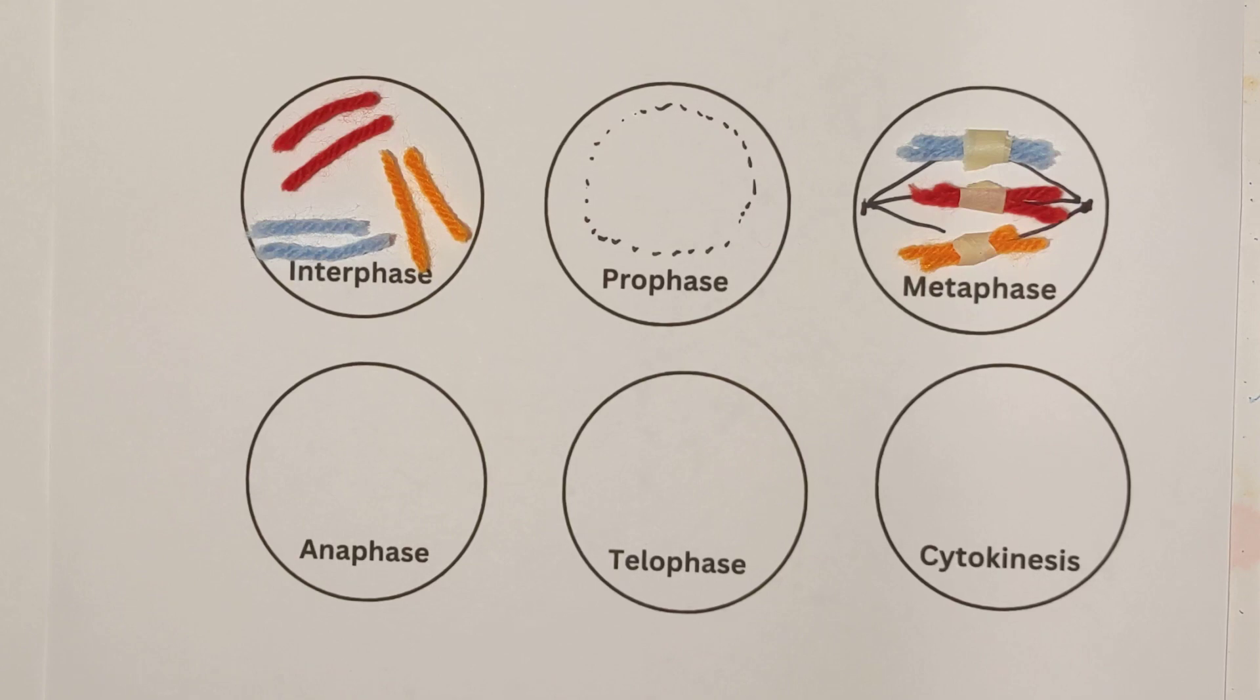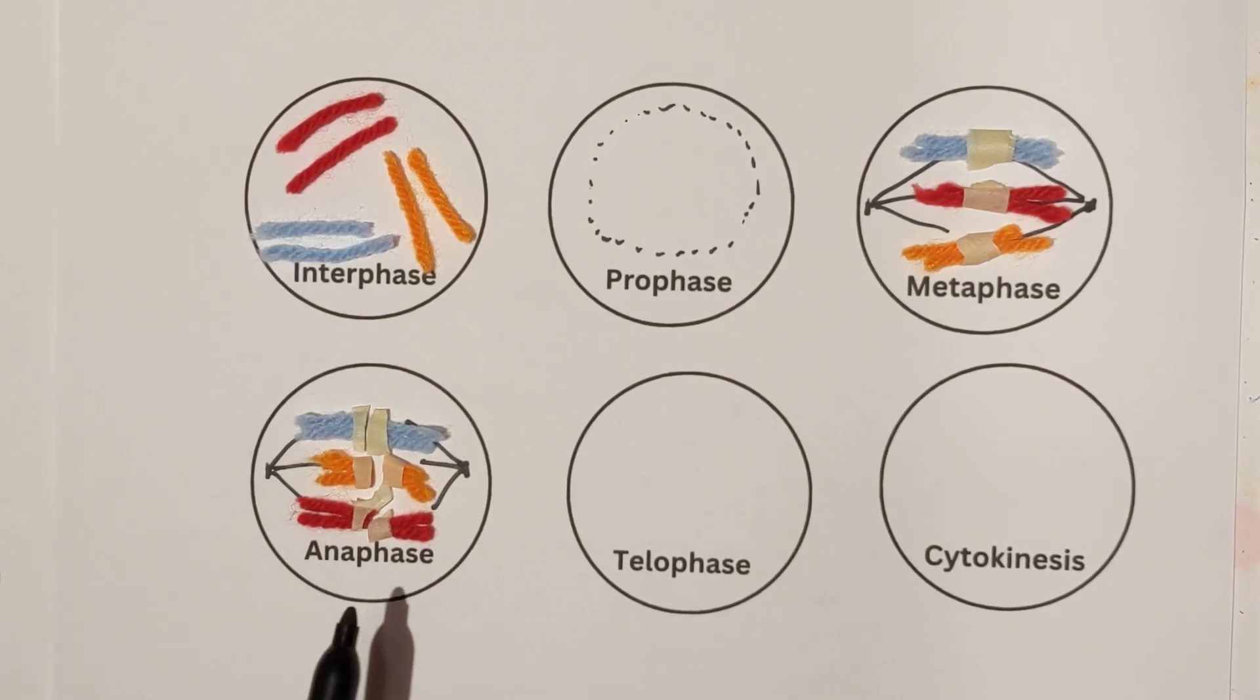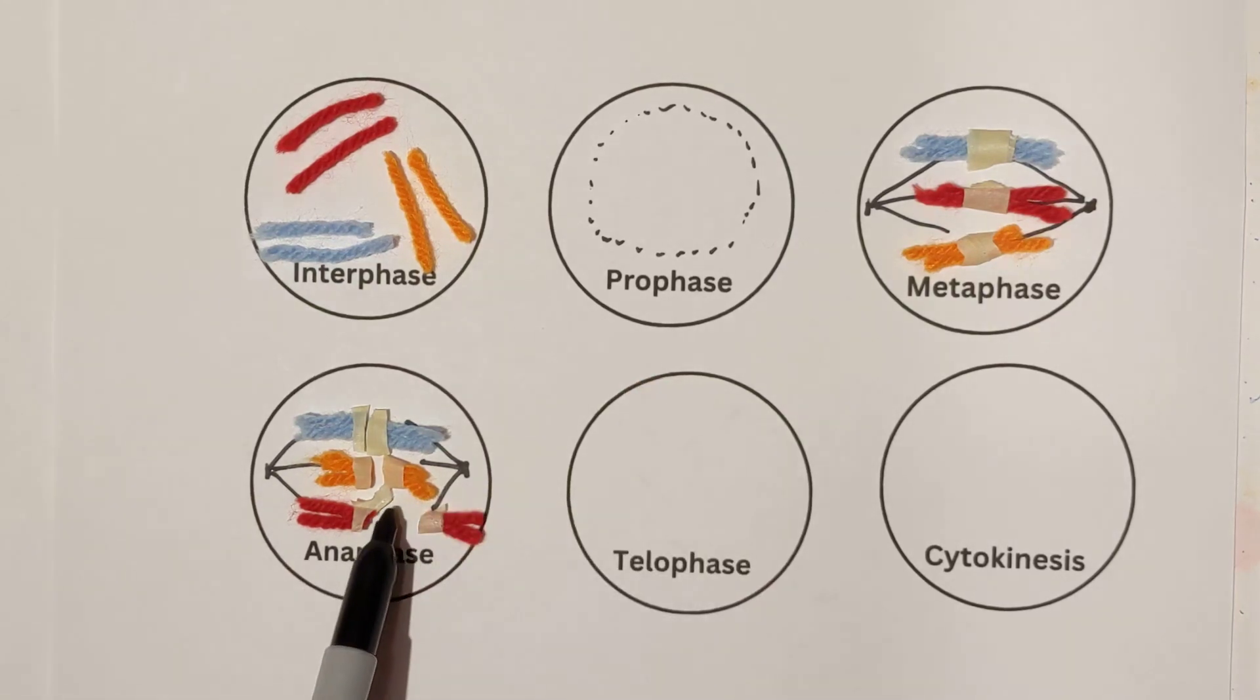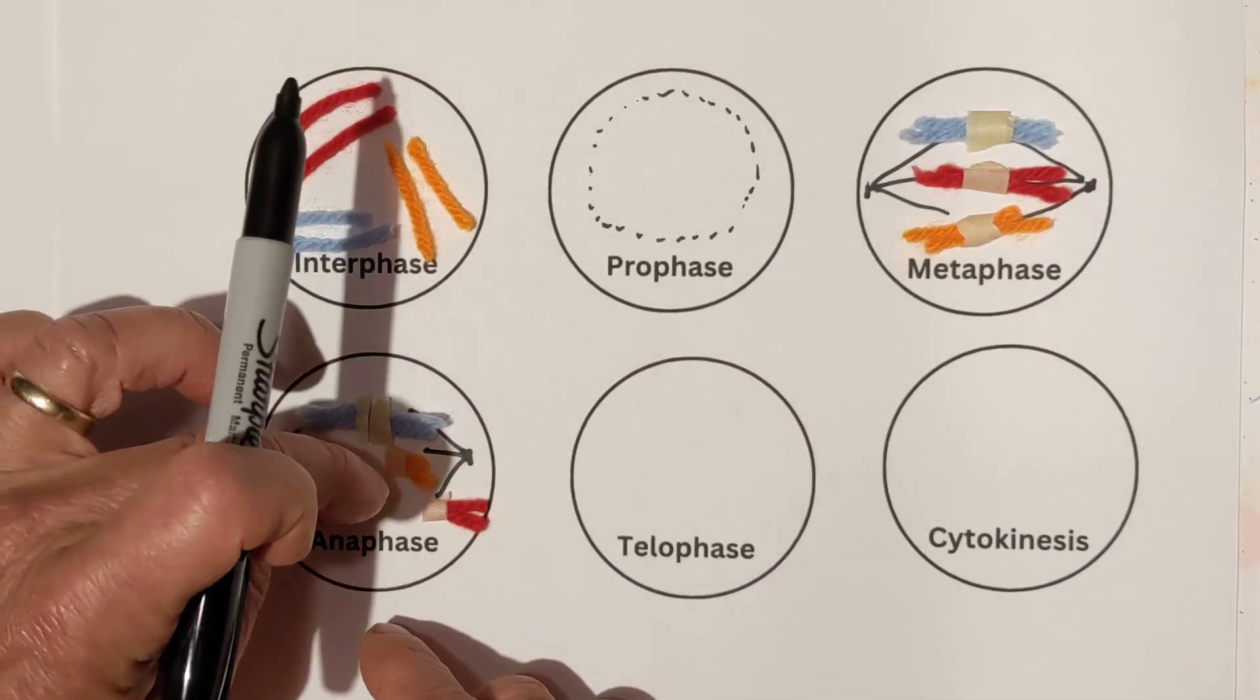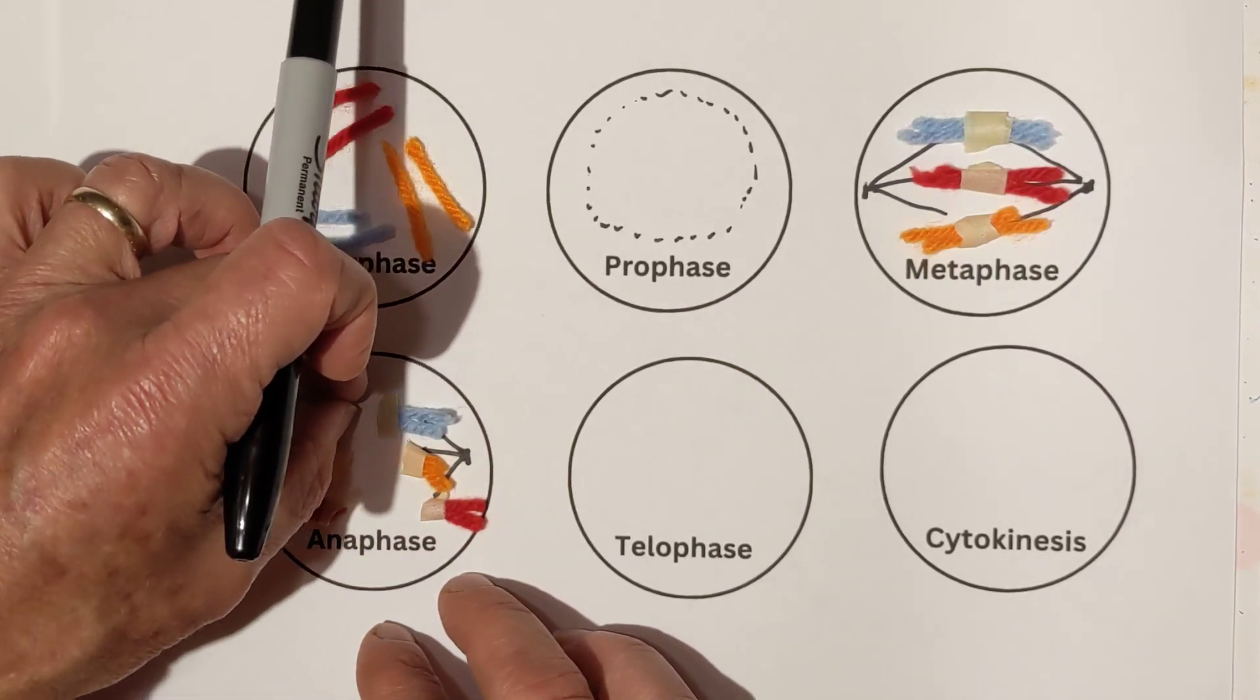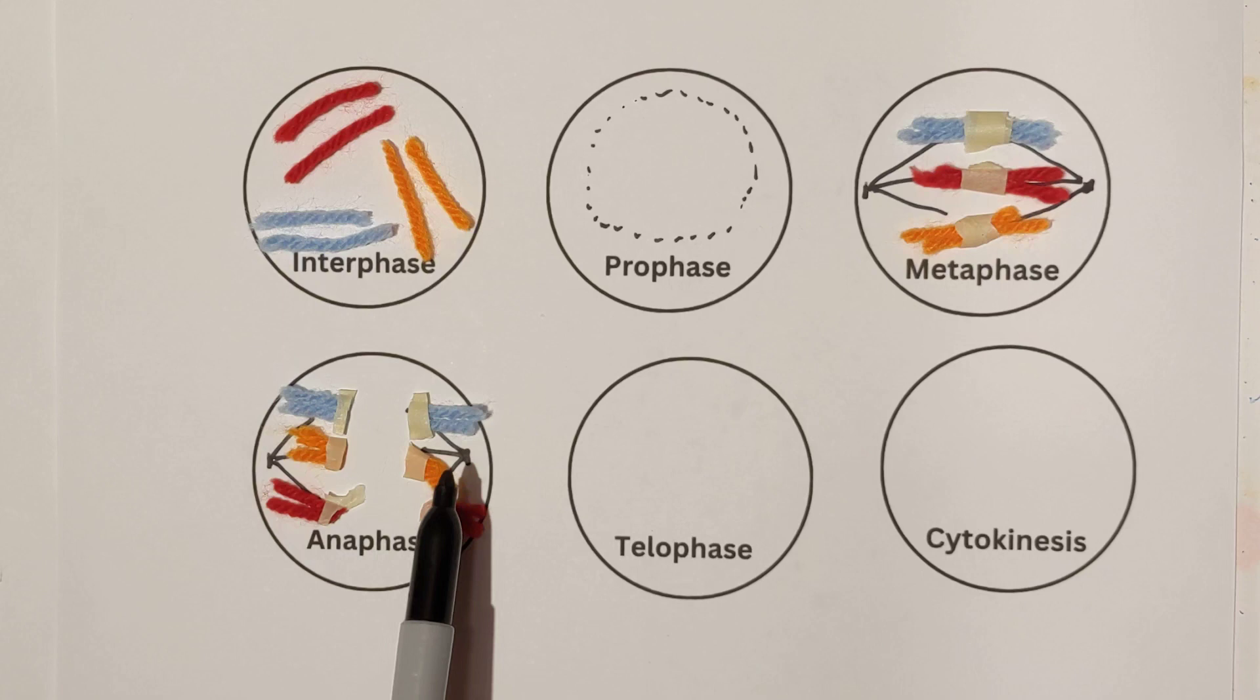And now it's ready to move into anaphase. Now, during anaphase, you have the spindle fibers still attached. And now what happens is that this chromosome kind of breaks in half, splits in half, and one sister chromatid goes in one direction, one goes in the other. And so these spindle fibers are pulling on it, and each one is going away from one another.